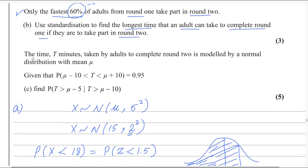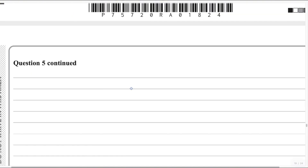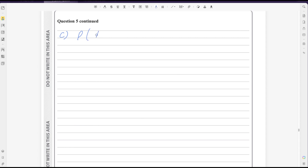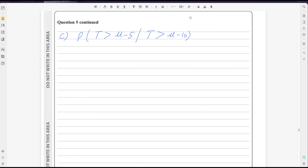Now the time T minutes taken by adults to complete round two is modeled by a normal distribution with mean μ. It is given that P(μ − 10 < T < μ + 10) = 0.95. We need to find P(T > μ − 5 | T > μ − 10). To solve Part C, we use the basic formula of conditional probability.